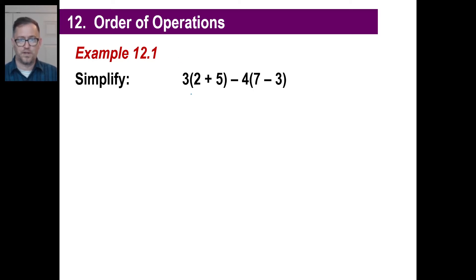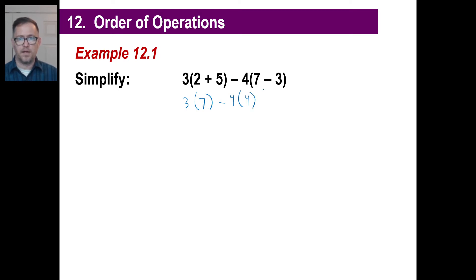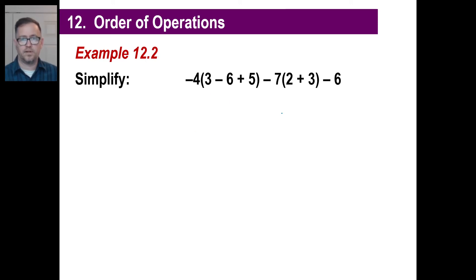Parentheses first. This is 3 times 7 minus 4 times (7 minus 3), and 7 minus 3 is 4. Then 3 times 7 is 21, minus 4 times 4 which is 16, and 21 minus 16 is simply 5.